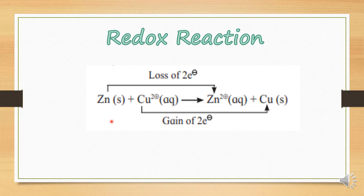After some time, you observe that the blue colour of the copper sulphate solution starts disappearing and gradually turns colourless because zinc sulphate solution is forming. When you add the zinc rod, zinc starts losing electrons, and those two electrons from the zinc metal are accepted by the copper ions, which turn into copper metal and settle down in the beaker. In this case, there is a direct transfer of electrons from the zinc atom to the cupric ion.